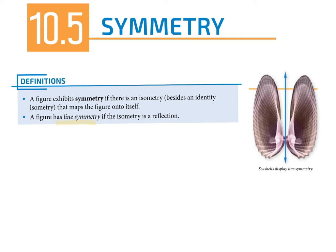Line symmetry means the isometry is a reflection — you have a line of reflection somewhere in the figure that you could reflect across. They've given us this example of a seashell. If you were to close the shell, you'd see it's the same on both sides. That is line symmetry: you could take one side and reflect it over that line and you'd have the other figure.